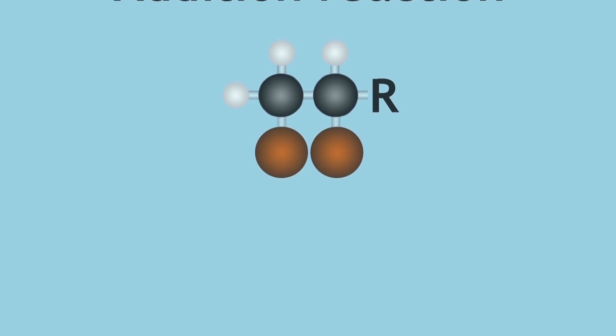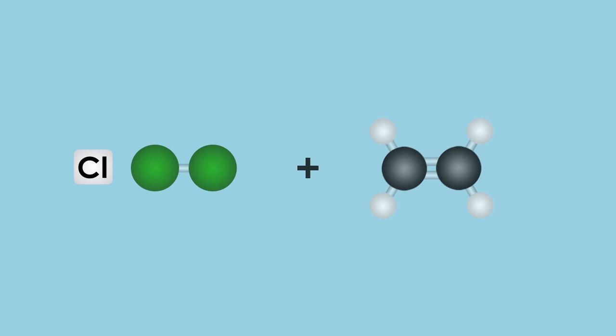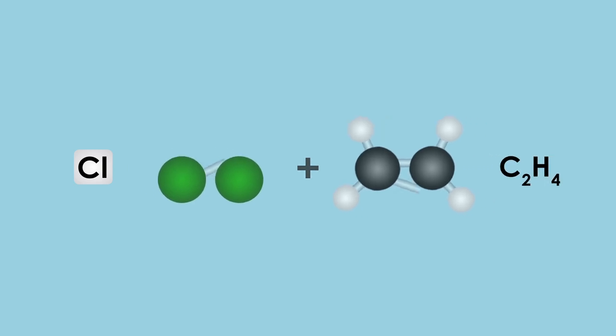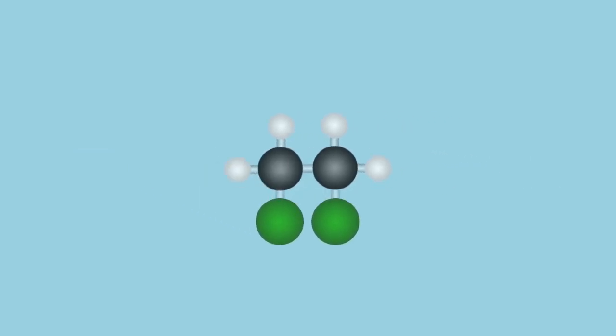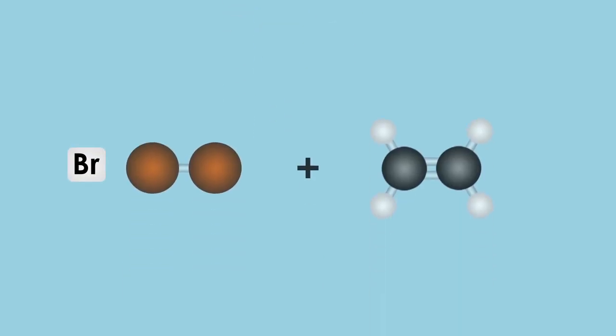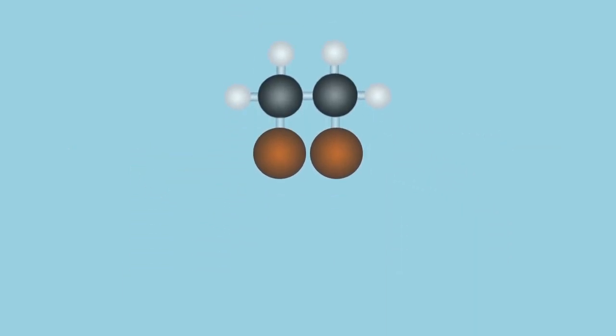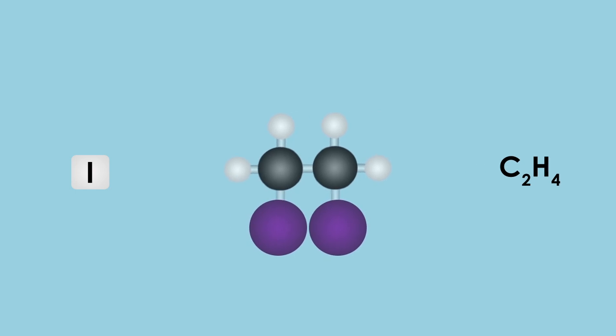This animation shows chlorine in an addition reaction with ethene, followed by the reaction of bromine and ethene, and here is iodine and ethene.